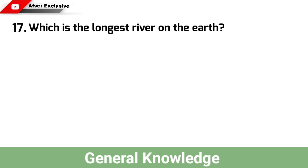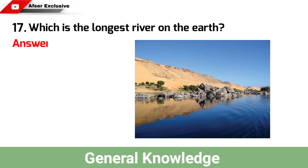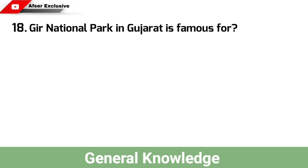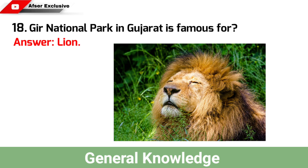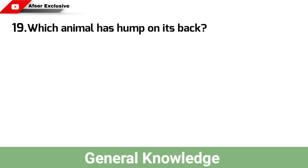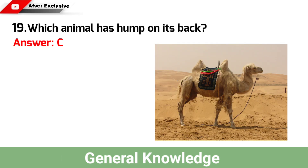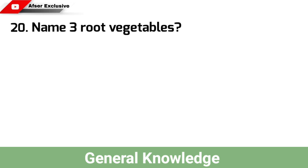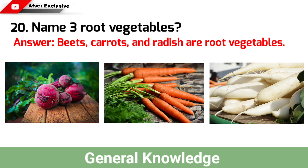Which is the longest river on the Earth? Answer: Nile. Gir National Park in Gujarat is famous for? Answer: Lion. Which animal has a hump on its back? Answer: Camel. Name three root vegetables? Answer: Beets, carrots and radish are root vegetables.